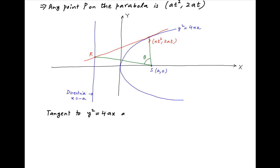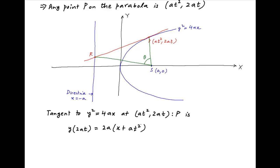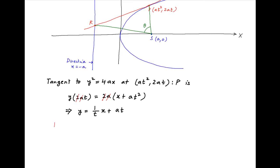The equation of the tangent to y² = 4ax at the point (at², 2at) is obtained by replacing y² with y·(2at) on the left-hand side and replacing 2x with x + at² on the right-hand side. This gives y·(2at) = 2a(x + at²). Cancelling 2a and dividing both sides by t, the equation of the tangent is y = (1/t)(x + at).